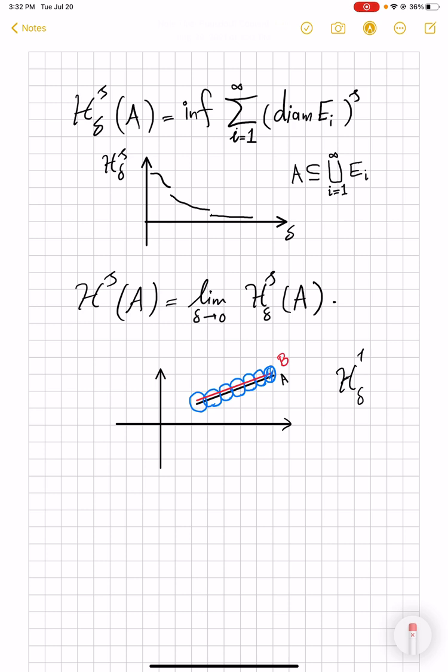Well, the H^S_δ does not satisfy some of the properties we would expect from a nice measure, and to illustrate that point, it's enough to look at the subsets of the plane and H^1_δ.